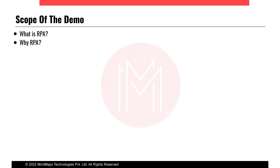UiPath, around 2005 or 2007, came up with software to automate such tasks. It started slow, grew steadily, and now has even AI capabilities. Why RPA? Because we need to save time — we cannot keep doing redundant tasks. You need to cut costs. If two people are doing the same activity again and again, replacing them with a bot costs less than what you pay those people.